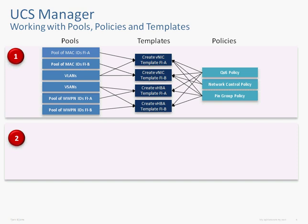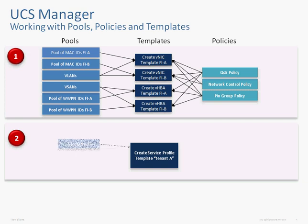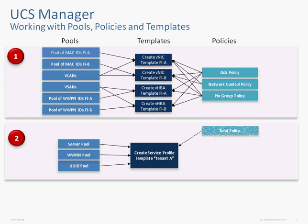Once we've done that, we can start to actually work on our service profile template. The service profile template needs a few things — it needs to know where to get the actual blades from, so there will be a pool of server blades. There'll be a worldwide node name pool for it to pull an individual worldwide node name, and the same for the UUID. On the policy side, there will be about five policies you'll likely be using. Boot policy is the first one: do I boot from local disk, or do I boot from SAN?